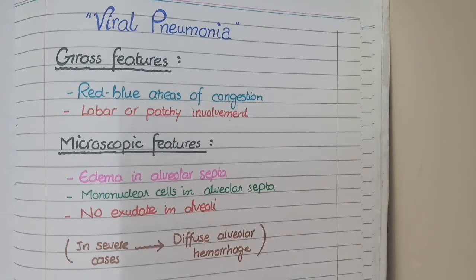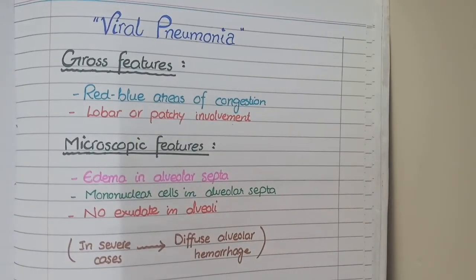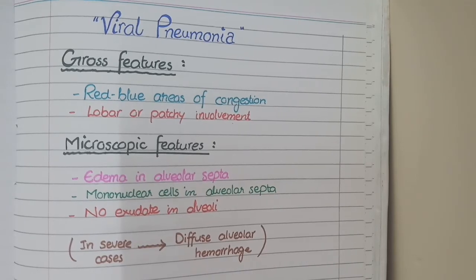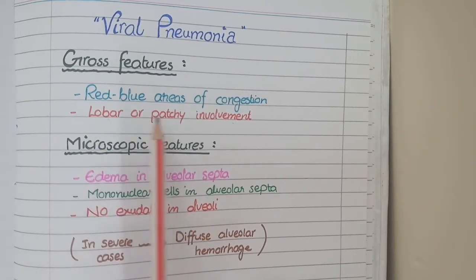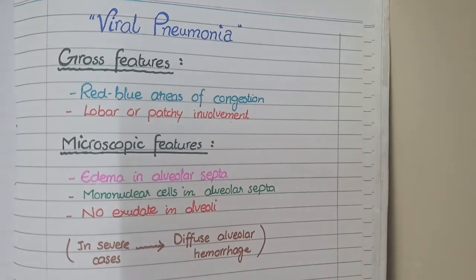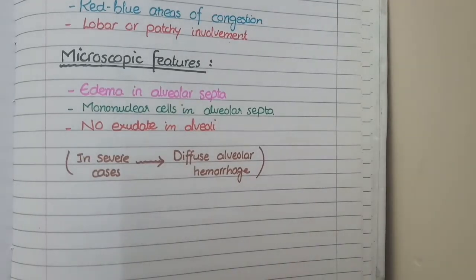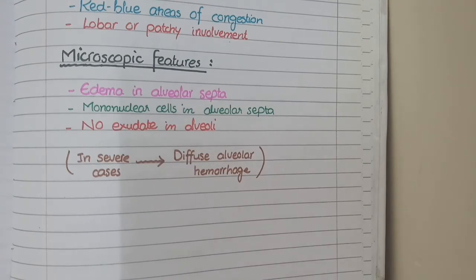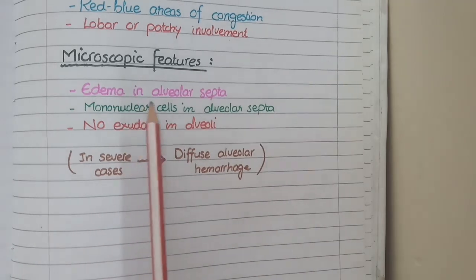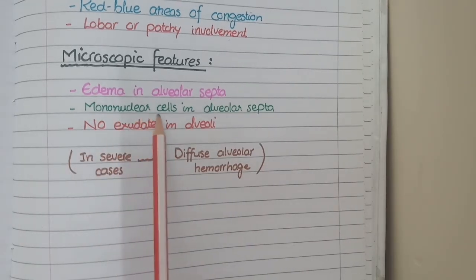Up till this point, the pathological features we studied were confined to bacterial pneumonia. Now we will study the specific features of viral pneumonia. The gross features in viral pneumonia are the same as bacterial pneumonia — that is, red-blue areas of congestion and lobar or patchy involvement. However, the microscopic features of viral pneumonia are different and distinct. In bacterial pneumonia, the alveoli get filled with edematous fluid and blood cells. But in viral pneumonia, the respiratory membrane or alveolar lining is not severely damaged, so edema occurs only in the alveolar septa and there is no exudate in the alveoli. Additionally, as in viral infections, the inflammatory cells are lymphocytes and macrophages rather than neutrophils — so you see these mononuclear cells instead.